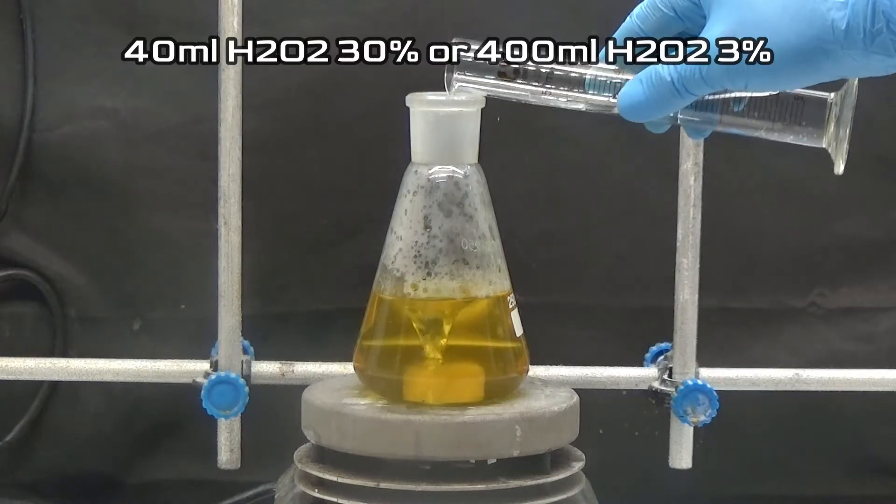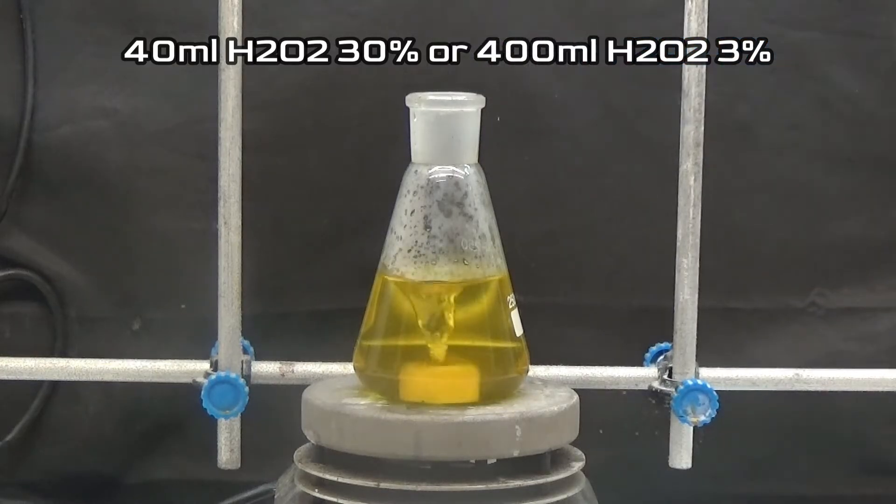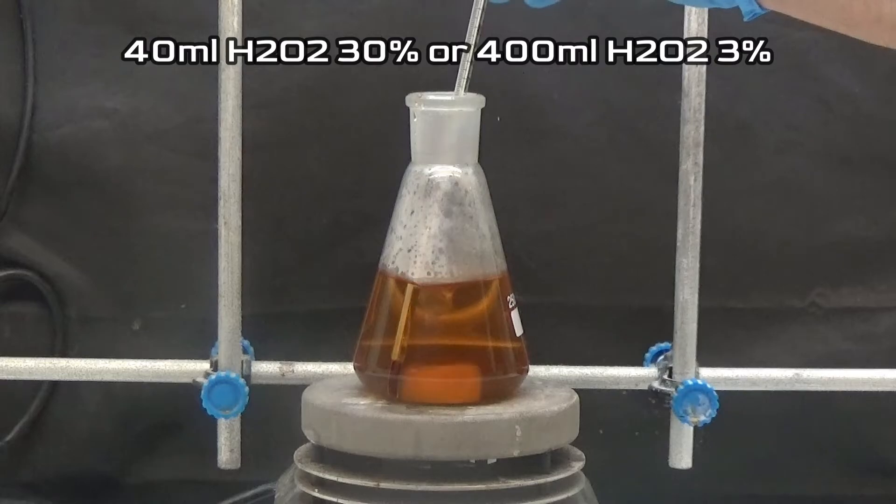When the solution is homogeneous, add 40 milliliters of 30% hydrogen peroxide. If 30% hydrogen peroxide is not available, use 400 milliliters of 3% peroxide and change the 250 milliliters flask to a liter one.